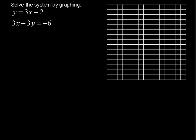So when we're graphing each of these, we will find that the intersection — the point of intersection, that is where the two graphs cross — will be the x-y solution.